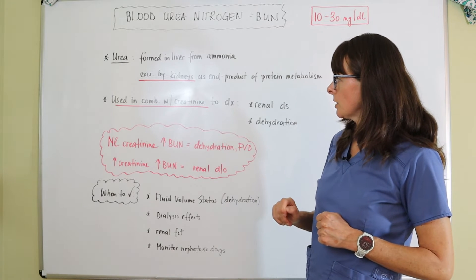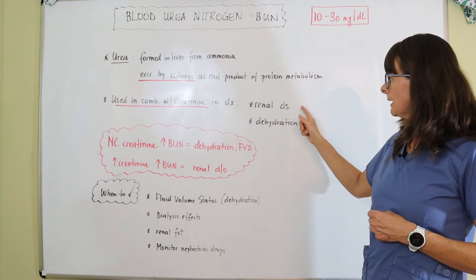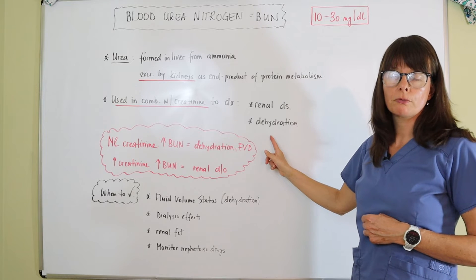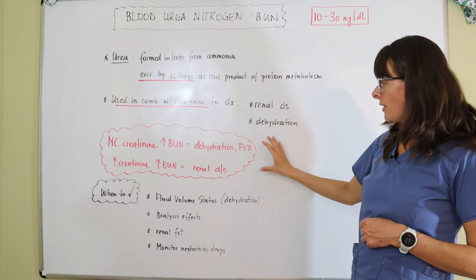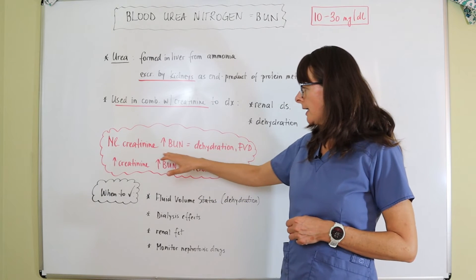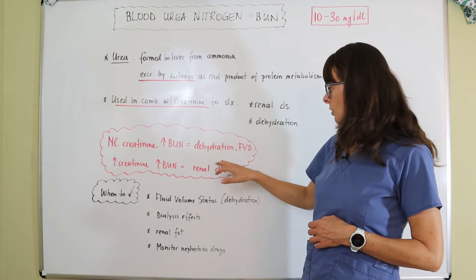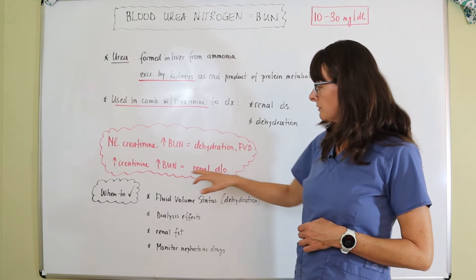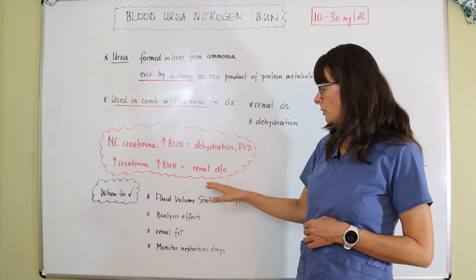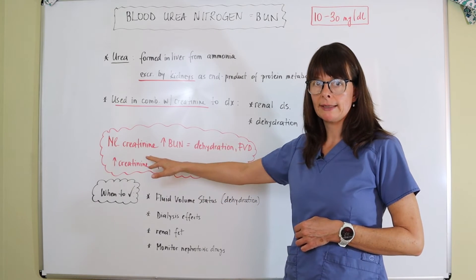BUN is always used in combination with creatinine to diagnose two things: any kind of renal disorder, because we know the kidneys excrete it, and dehydration or fluid volume status. An important note: if the patient has a normal creatinine and an increased BUN, they're most likely dehydrated or have fluid volume deficit. But if both creatinine and BUN are increased, that indicates some sort of underlying renal disorder. Please check out my other video for more detail on what creatinine measures.